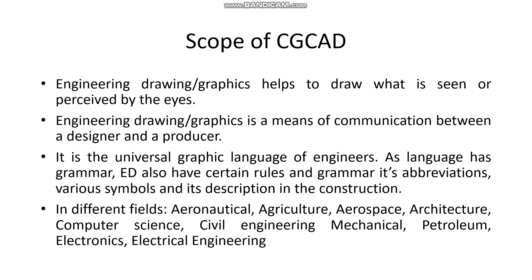Just as other languages have grammar, engineering drawing also has certain rules in the form of grammar — its abbreviations, various symbols, its principles, and its description in construction. All these unique things make it a universal graphic language that all engineers can understand. That is why it is so important for every engineer to study this subject.